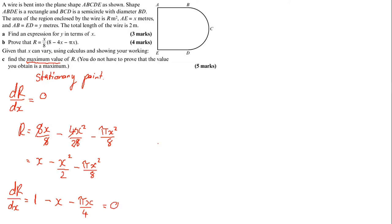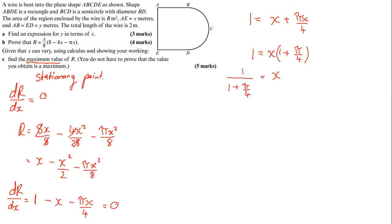Setting dR/dx equal to zero to find the stationary point, we rearrange and factorize: 1 equals x times (1 plus pi over 4). Therefore x equals 1 over (1 plus pi/4). Multiplying numerator and denominator by 4: x equals 4 over (4 plus pi). We don't need to prove it's a maximum, so no second derivative required.